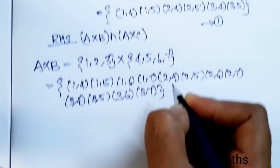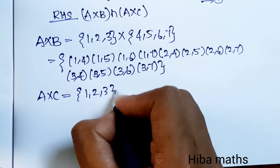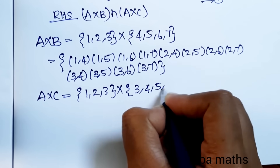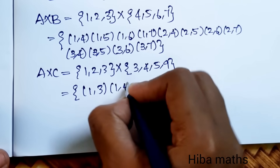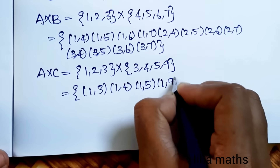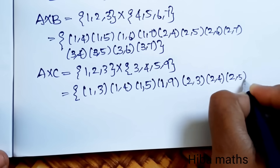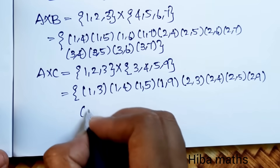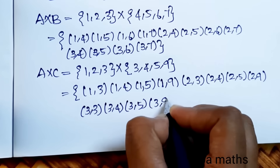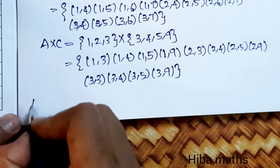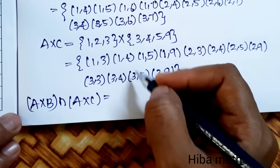Next compute A×C. A = {1,2,3} cross C = {3,4,5,9} gives: (1,3),(1,4),(1,5),(1,9),(2,3),(2,4),(2,5),(2,9),(3,3),(3,4),(3,5),(3,9). Now we need to find (A×B)∩(A×C), that is, the common elements between these two sets.